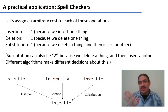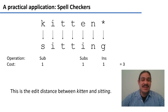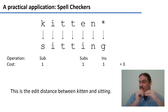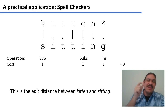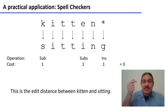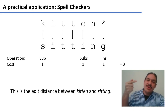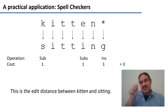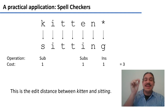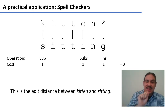Let's assign a cost of one to all of them for this example. Let's say we want to measure the distance between the word 'kitten' and the word 'sitting.' To transform kitten into sitting, we first substitute k with s — cost one. The i and two t's are fine. We substitute e with i — cost one. Then we insert a g at the end, since kitten doesn't have one — cost one. In total, transforming kitten into sitting costs three units of effort. We're going to call this the edit distance between kitten and sitting.